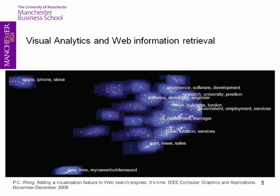This is called a galaxy representation of how pages retrieved in response to a query can be represented — an example by Wong in 2008. Each of these white dots is a page that is retrieved, and the query here is 'jobs.' A clustering algorithm is also applied and you can see a number of clusters: software development, software developer, academic positions, business, sales, and so on. But you can also see a cluster about Apple, iPhones, and Steve. So the user might be looking for a job, or they might want to know something about Steve Jobs of Apple.